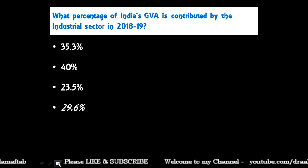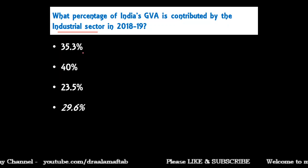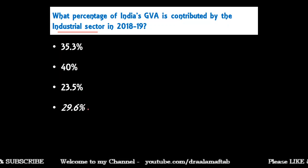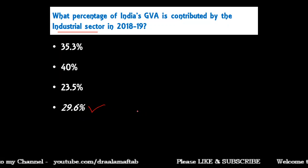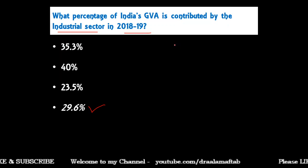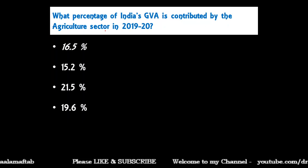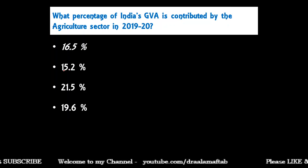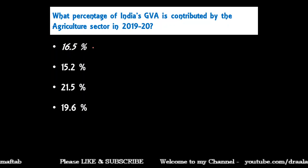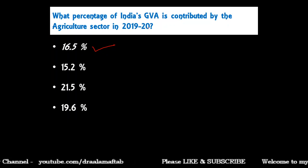Next question: What percentage of India's Gross Value Added is contributed by the industrial sector in 2018-19? Options are: 30%, 35.3%, 40%, 23.5%, or 29.6%. The correct answer is 29.6 percent. Following that: What percentage of India's GVA is contributed by the agriculture sector in 2019-20? Options are: 16.5%, 15.2%, 21.5%, or 19.6%. The correct answer is 16.5 percent.